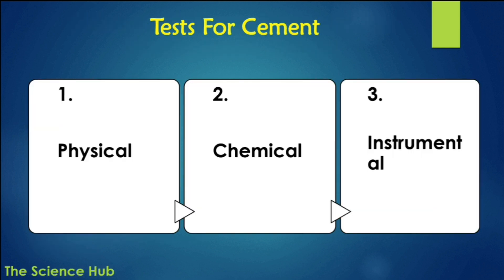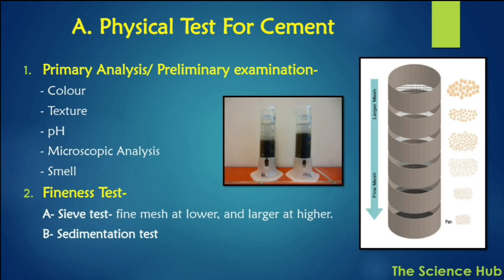There are different types of test categories: first, physical tests; second, chemical tests; and third, instrumental analysis. In physical tests, primary and preliminary analyses are conducted, including color test, texture test, pH of the cement, microscopic analysis, and smell test.